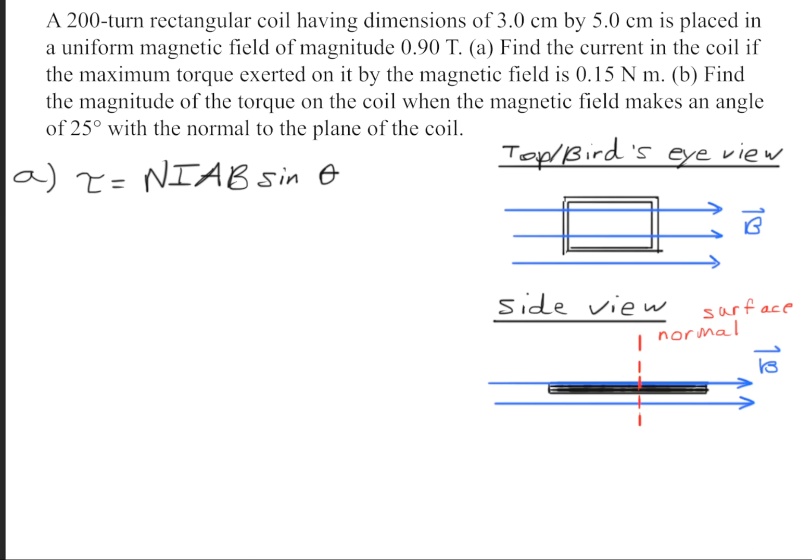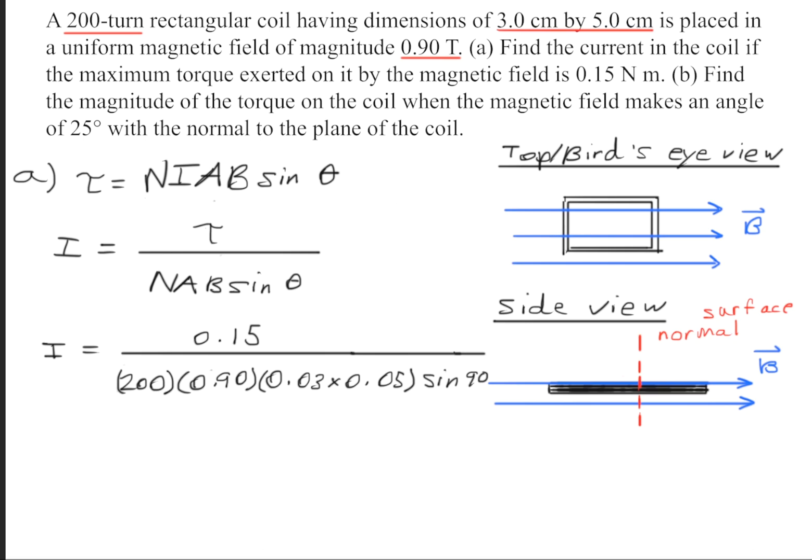We use the symbol μ to symbolize that. So this angle represents the angle between the magnetic field and the magnetic moment, or you could think of it as the magnetic field and the surface normal. Next we'll rearrange the equation so that we solve for I.